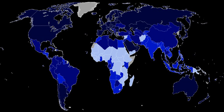The Inequality Adjusted Human Development Index (IHDI) is a measure of the average level of human development of people in a society once inequality is taken into account. Countries in the top quartile of HDI with a missing IHDI include Taiwan, New Zealand, Singapore, Hong Kong, Liechtenstein, Brunei, Qatar, Saudi Arabia, Andorra, United Arab Emirates, Bahrain, Cuba, and Kuwait.